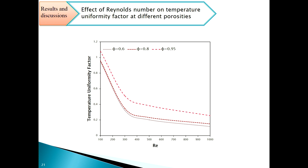Here is the effect of Reynolds number on the temperature uniformity factor, a very important metric for fuel cells as it quantifies how uniform the temperature distribution is. We can see that it decreases with Reynolds number at different porosities. With higher porosity, the temperature uniformity factor is higher; with lower porosity, it is lower.